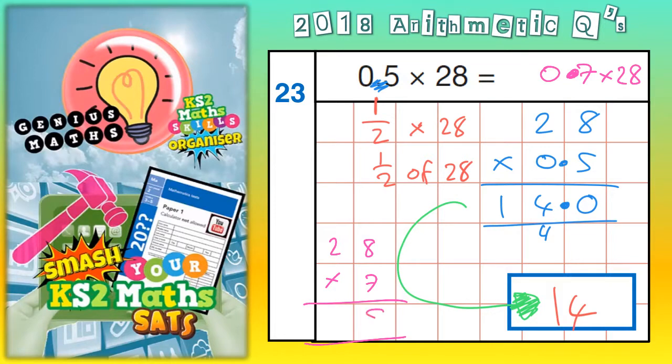Okay, 7 eights are 56. Put the 6 in, carry the 5. 7 twos are 14, plus the 5 is 19.